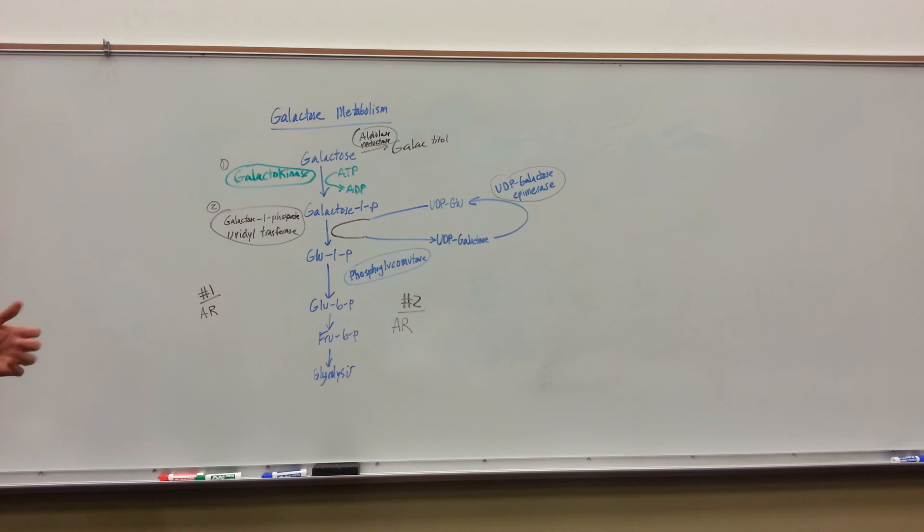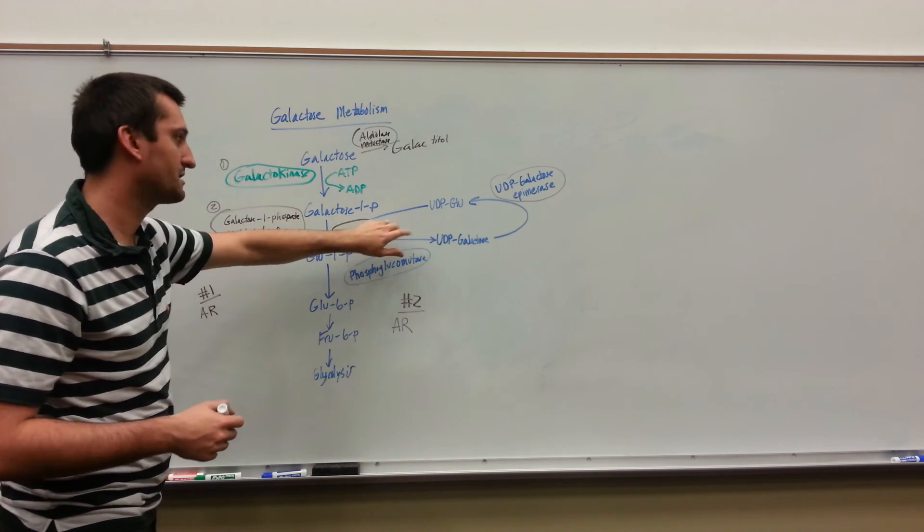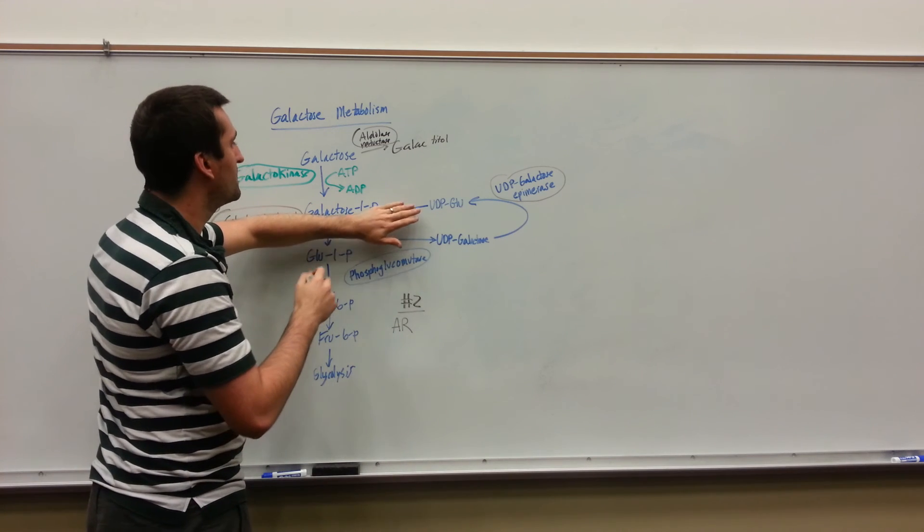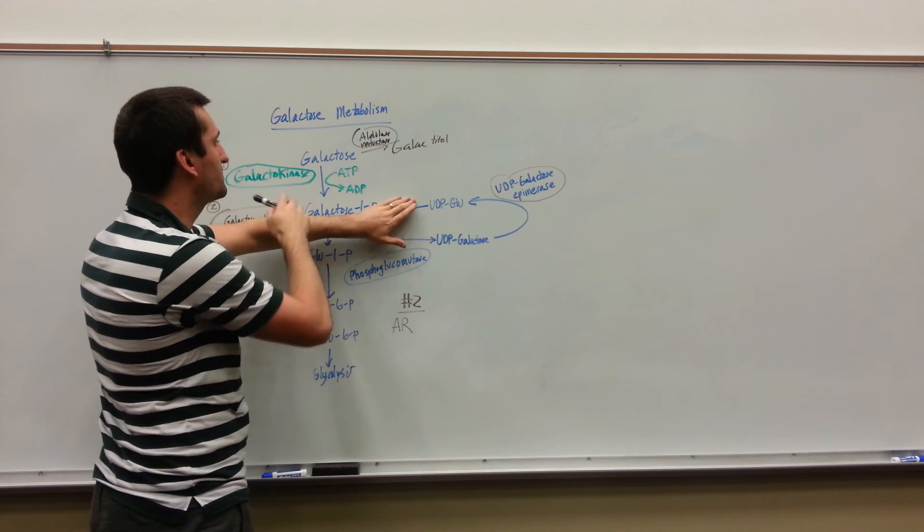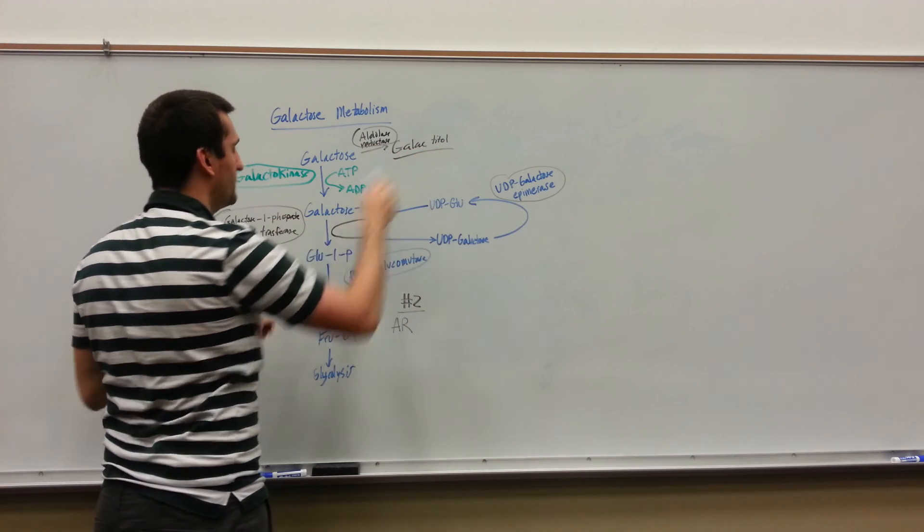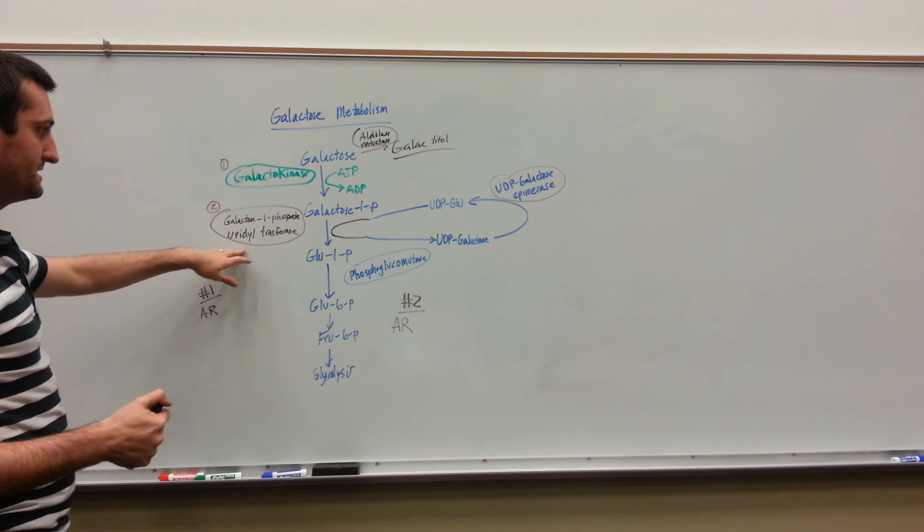What happens if you have a galactose 1-phosphate uridyl transferase deficiency? You're going to have a backup. You're not able to catalyze this reaction right here. You're going to have a galactose 1-phosphate buildup. That will eventually lead to a galactose buildup. Again, you're going to have a galactitol buildup. You're going to have cataracts in the eye if you have this enzyme missing as well.